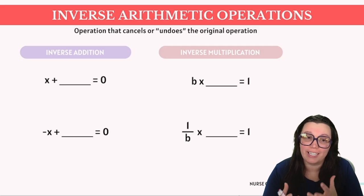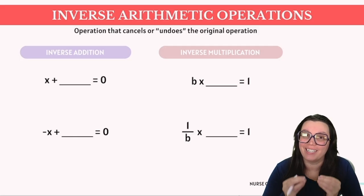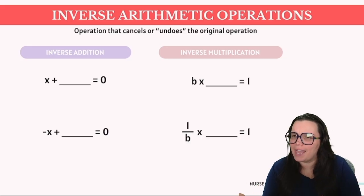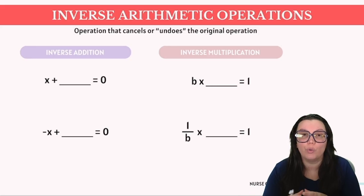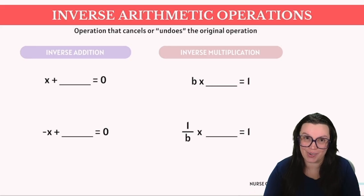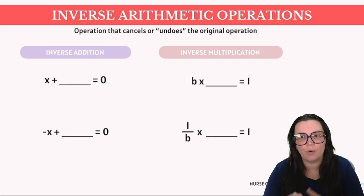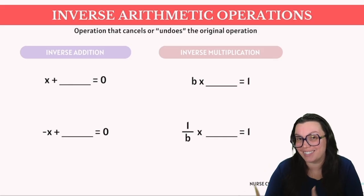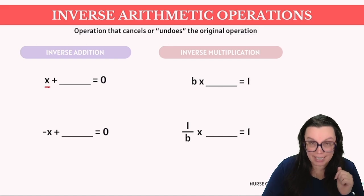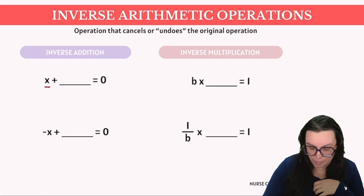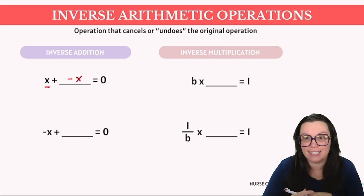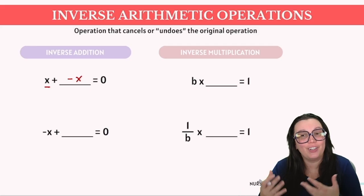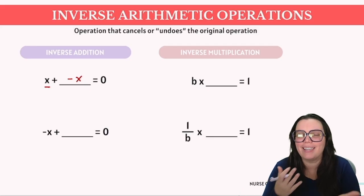Another important concept you're going to need to know is inverse arithmetic operations. This principle revolves around the question: what do we add, subtract, multiply, or divide into a number for it to result in zero? To illustrate this concept, consider an example where we're looking to find what can be added to a positive number to result in zero. Given that x is a positive number, the additive inverse would be negative x — its negative counterpart. Therefore if you add x to negative x you're going to get zero. They essentially cancel each other out.